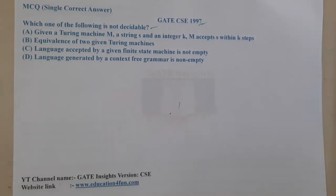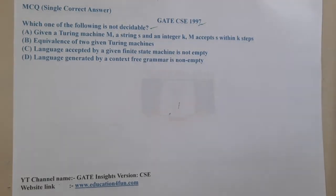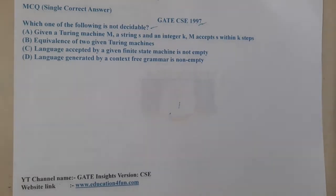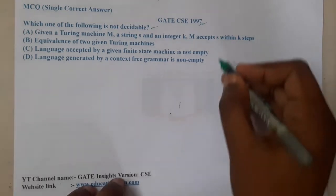Option B says equivalence of two Turing machines. Option C says language accepted by a given finite state machine is non-empty, and option D says language generated by the context-free grammar is non-empty. I think we can conclude that options C and D are 100% true. If you recall the table, we can solve them.